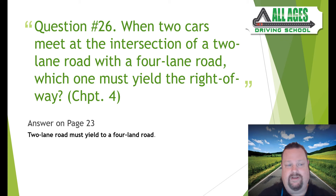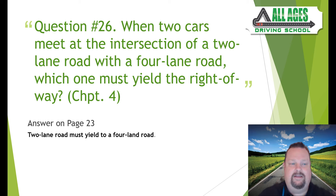Question number twenty-six: when two cars meet at the intersection of a two-lane road with a four-lane road, which must yield the right of way? Chapter four, page 23. The two-lane road must yield to the four-lane road. Whenever a single or lesser road meets a multi-lane road, the lesser road always yields the right of way to the larger, multi-lane road.